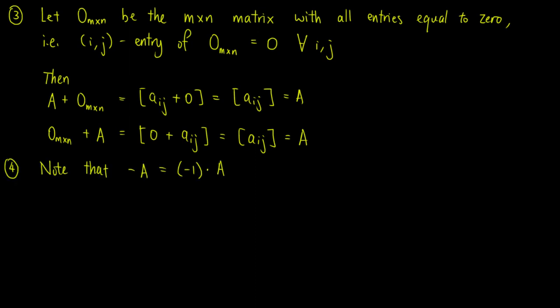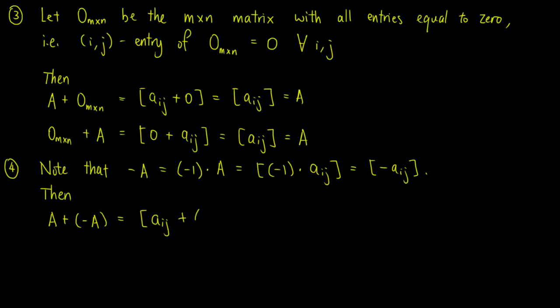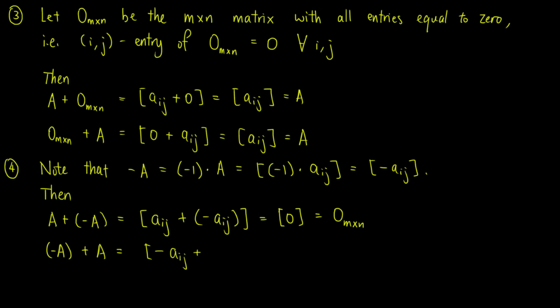For the fourth property, we note that negative A equals negative 1 times A, so we can put the negative 1 inside the entries to get the matrix with entries negative Aij. So, A plus negative A equals the matrix with entries Aij plus negative Aij, which is equal to the matrix with entries all equal to zero, which is just the zero matrix. Also, negative A plus A equals the matrix with entries negative Aij plus Aij, which is equal to the matrix with entries all equal to zero, and again this is equal to the zero matrix.